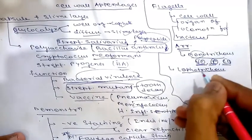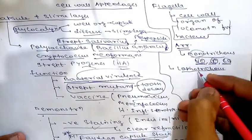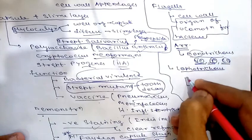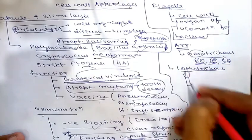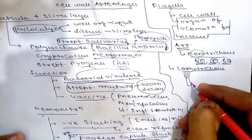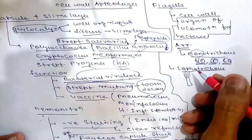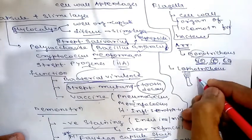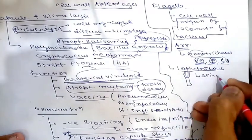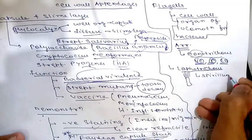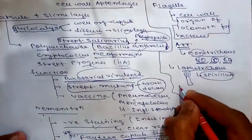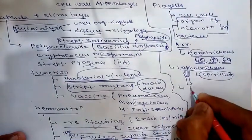The next arrangement is lophotrichous — multiple polar flagella at one end of the bacterium. This condition is seen in Spirillum.